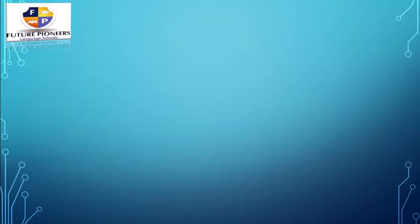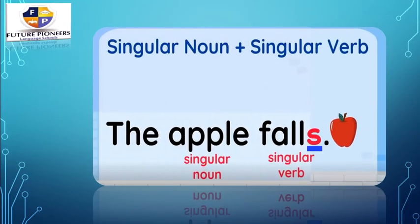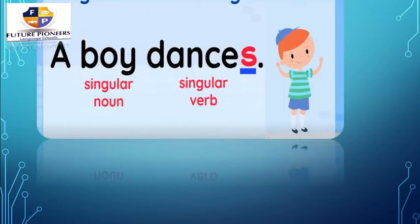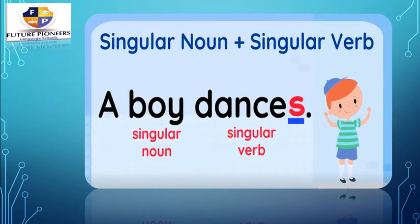Let's see more examples. Singular noun plus singular verb — add S to the verb. The apple falls. The apple falls — it's only one apple, so we added S to the verb. And here, a boy — it's only one boy, it's a singular noun — dances. We added S to 'dance' to make it a singular verb.